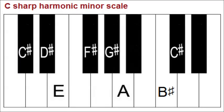Primary chords in a minor key are based on the 1st, 4th, and 5th notes of the minor scale. For minor keys, the scale used when forming primary chords is the harmonic minor scale.